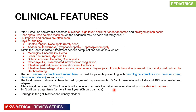After the first week of bacteremia, patients have sustained high fevers, delirium, a tender abdomen, and an enlarged spleen. They may also have rose spots — rose-colored macules on the abdomen that rarely occur, but if you see them, it's most likely typhoid fever. There may also be leukopenia. Physical findings include a coated tongue, rose spots, abdominal tenderness, lymphadenopathy, and hepatosplenomegaly. In the third week, if they do not receive treatment, severe complications develop.